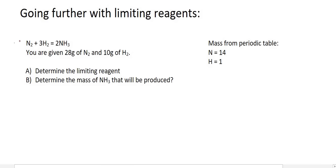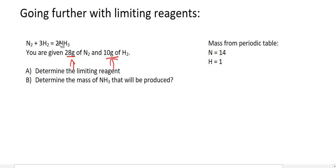We are given this reaction: nitrogen plus hydrogen gives us ammonia. You are given 28 grams of N₂ and 10 grams of H₂. Whenever they give you the grams of both starting materials, you always have to look at limiting reagents because you need to know which one is going to finish first.